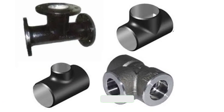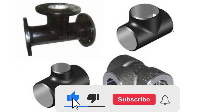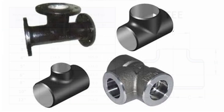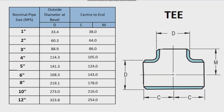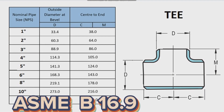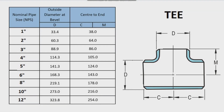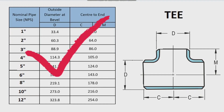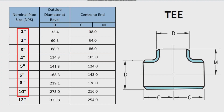The dimensions of pipe tees used in pipe fabrication are regulated by international standards. For example, pipe butt welding tee dimensions are covered in ASME B16.9. In piping, two types of tees are used: straight or equal, and reducing or unequal. This table is a dimension chart for equal tees, listing dimensions from 1 inch to 12 inches. Here, D is the outside diameter of the tee outlets, and M and C are the center-to-end dimensions of the tee.